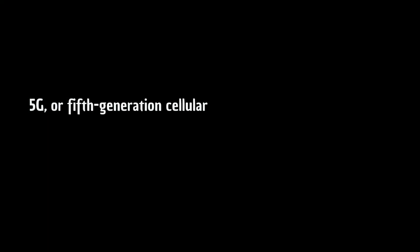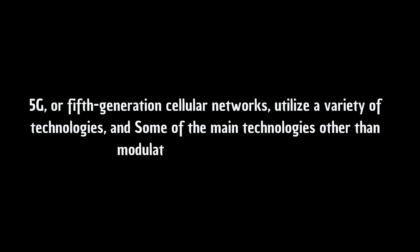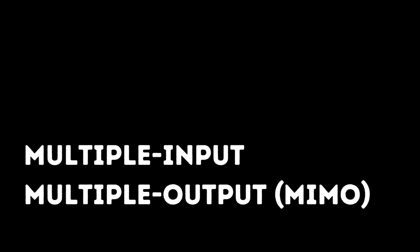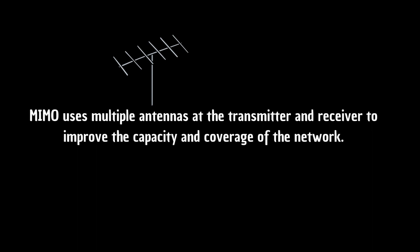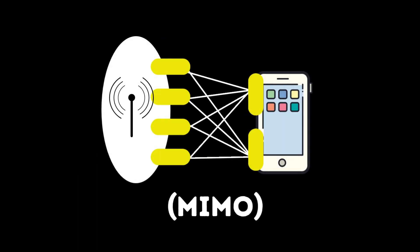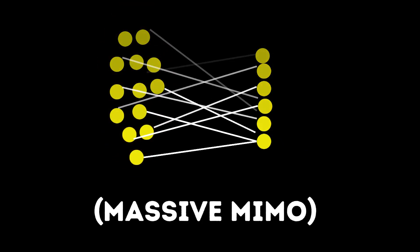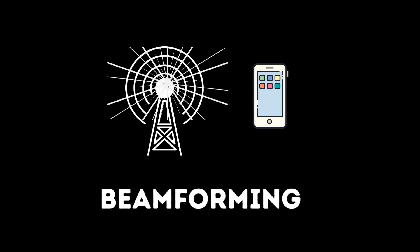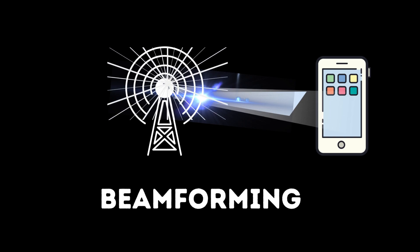5G, or 5th generation cellular networks, utilize a variety of technologies. Multiple Input, Multiple Output (MIMO) uses multiple antennas at the transmitter and receiver to improve the capacity and coverage of the network. Typical MIMO uses about 2 to 4 antennas. In 5G, this is referred to as massive MIMO, which uses 96 to 128 antennas for both transmitter and receiver to increase capacity even further. Beamforming uses multiple antennas to focus radio signals in a specific direction, improving coverage and capacity. This causes radio wave transmission to be focused and more specific — you can think of it as using a laser beam instead of a light bulb.